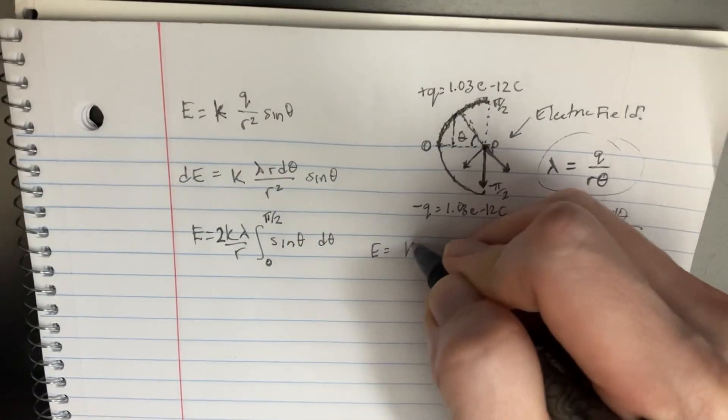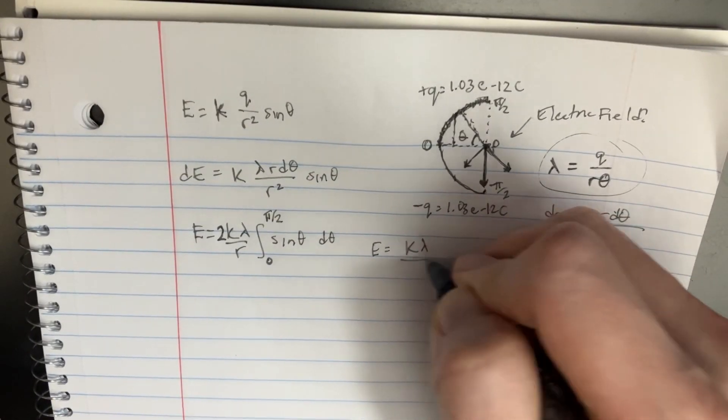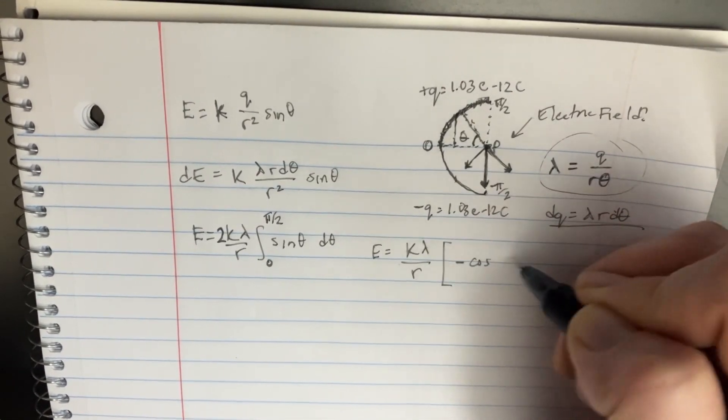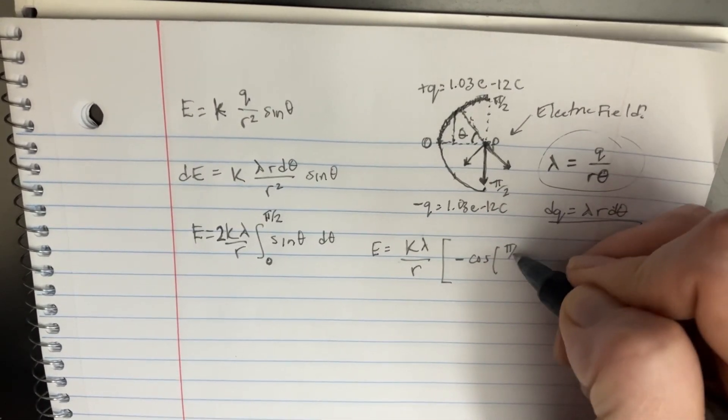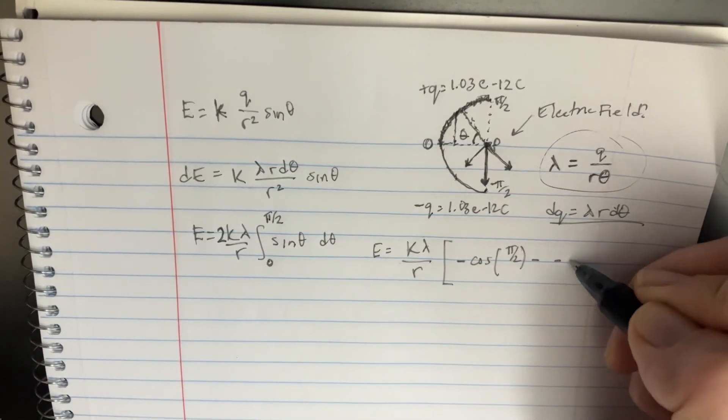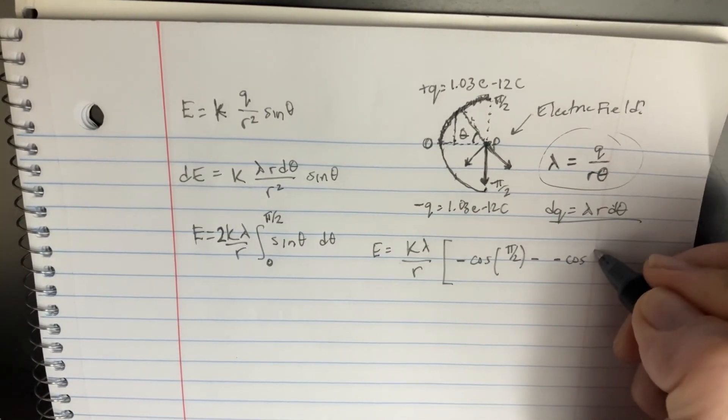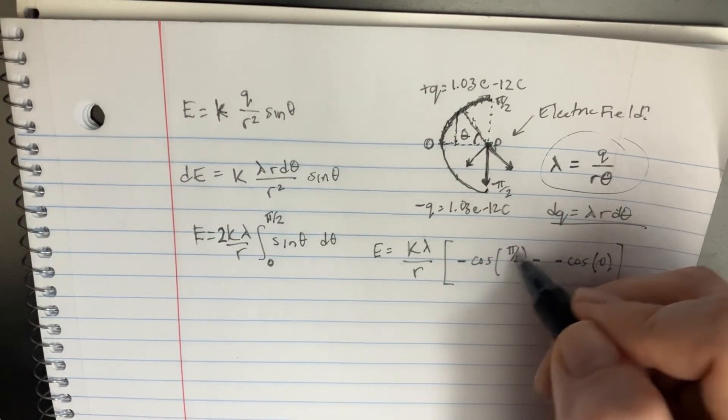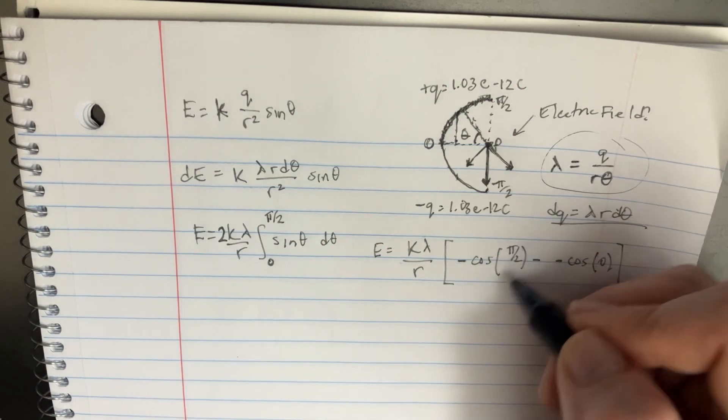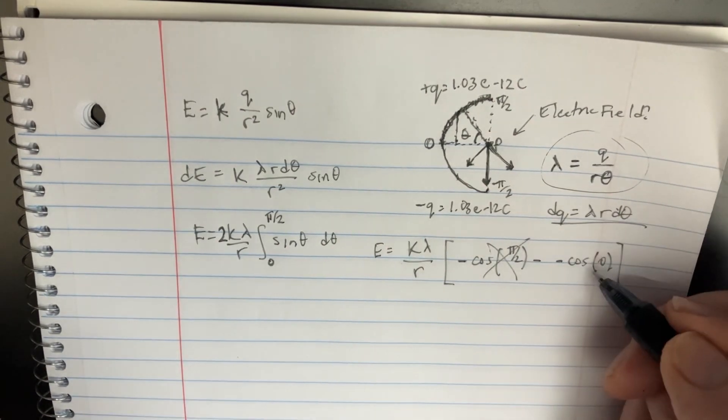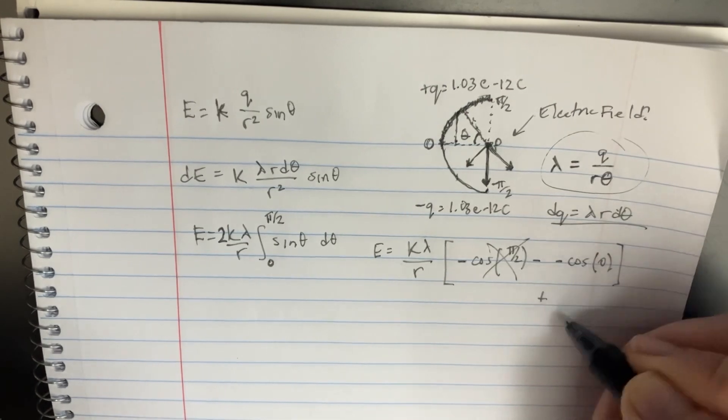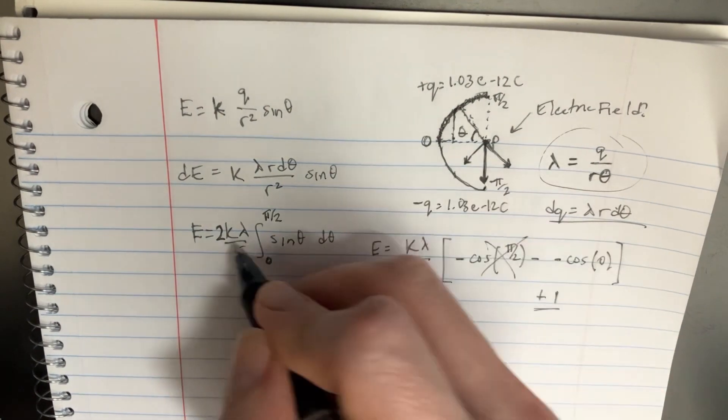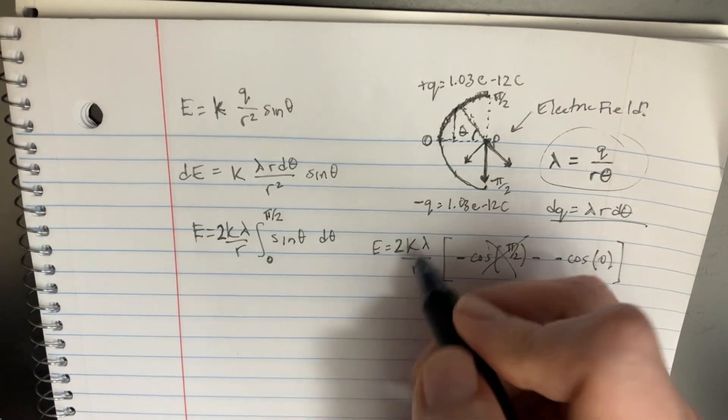So let's try to integrate this out. Lambda over R, and then we're going to do the negative cosine of the first one, which is pi over two, and then minus another negative cosine of zero. And when we figure this out, obviously negative cosine of pi over two, that's just zero. So that's just going to go away, and then we're going to be left with plus one over here. We forgot the two, this is basically just going to be our answer.